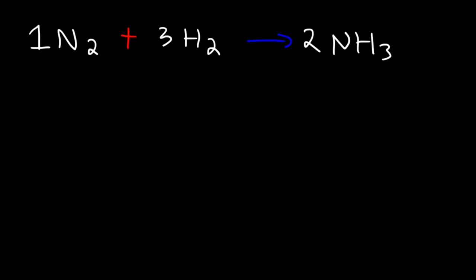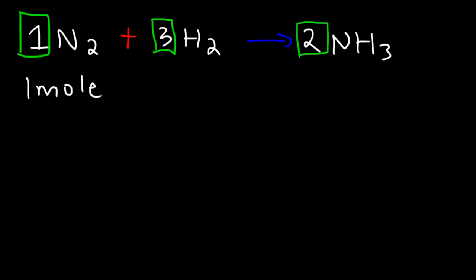The coefficients, which are the numbers in front of the reactants and the products, give us the molar ratio between compounds. Notice the numbers 1, 3, and 2. What this means is that 1 mole of nitrogen gas reacts equivalently with 3 moles of hydrogen gas to produce 2 moles of ammonia.